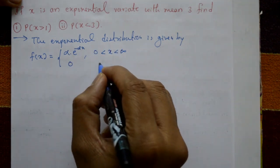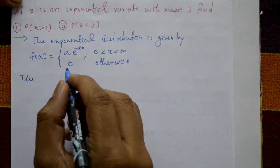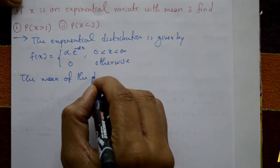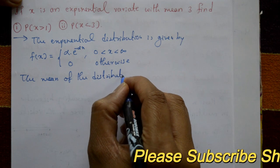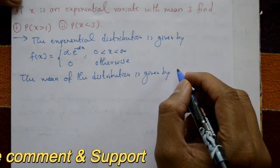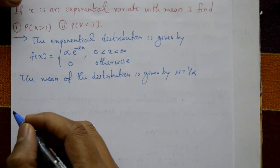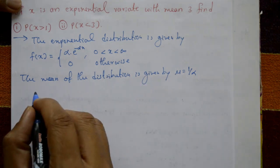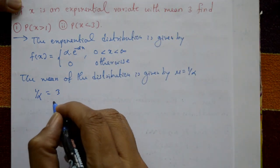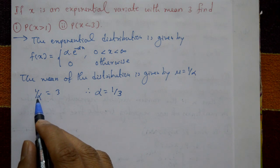The mean of the exponential distribution is given by μ = 1/α. Since the mean is already given as 3, we have 1/α = 3, which gives α = 1/3.